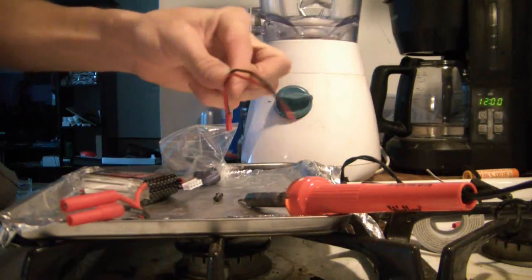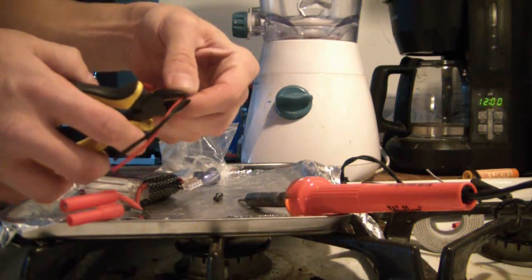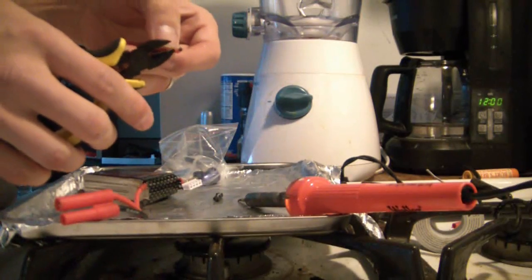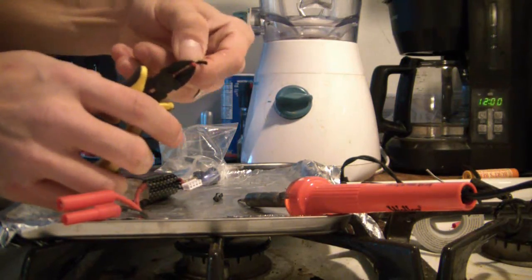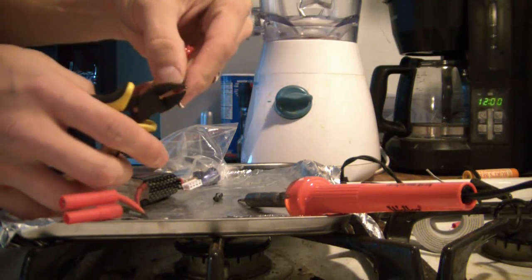First thing we're going to do is take our new connector and shorten it up a little bit, just because I don't want it to be that long. Then we're going to strip each of the wires so there's a little bit sticking out at the end of each one.